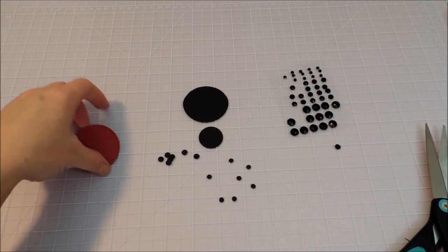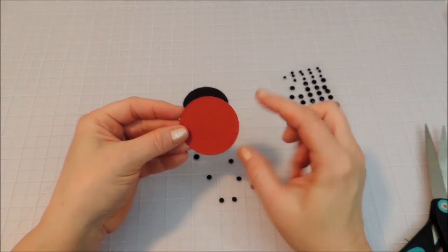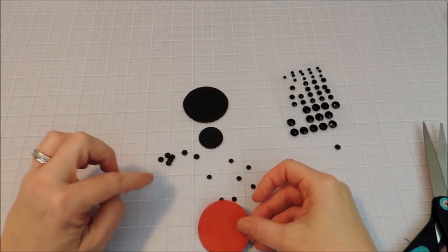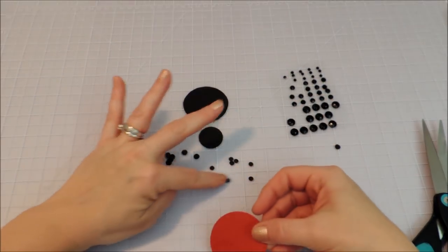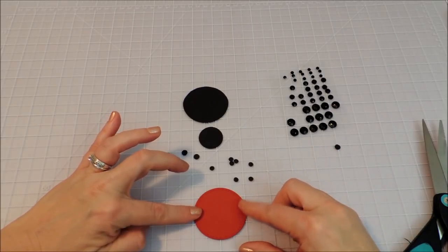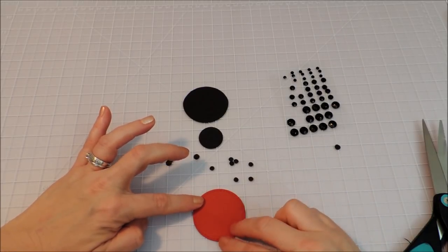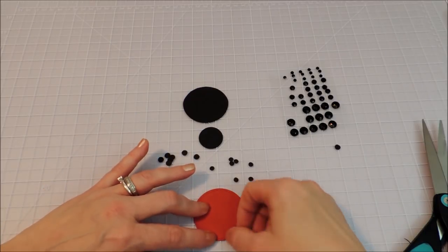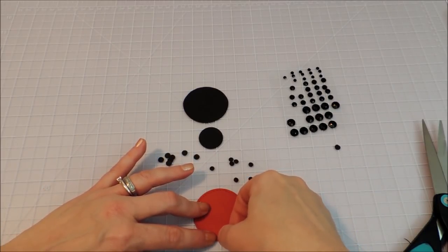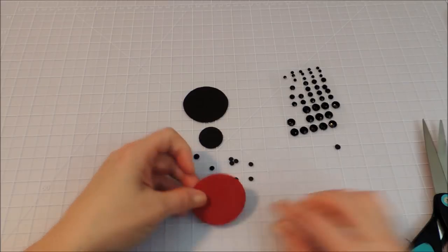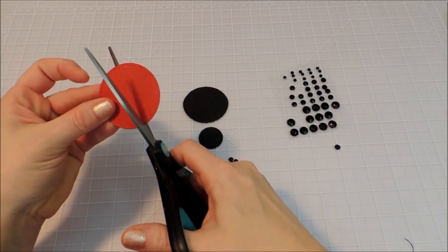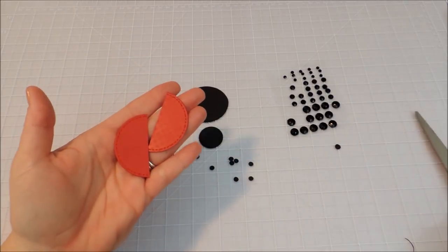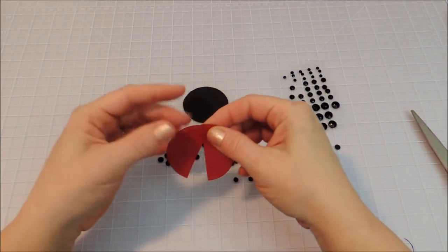And now I'm going to take my red one and I'm going to cut that right in half. And it's about two inches, so I'm going to lay this on my grid on my mat here just to kind of get an idea of where center is. And mark that with my thumbnail. And then I'm just going to cut straight up the middle. And that's going to be our ladybug wings.